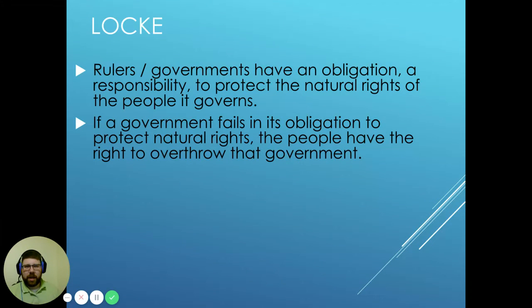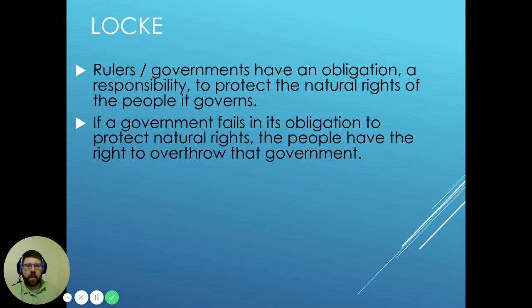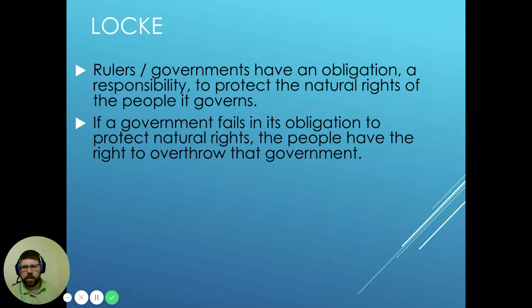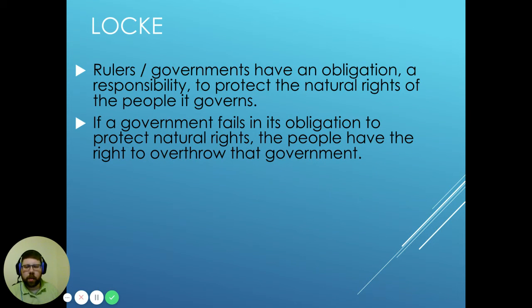This was radical for the time period — saying that if the government doesn't fulfill what it's supposed to do, the people are then obligated and have a right to overthrow that government and install a new one. This was radical for monarchs of the day, who believed they had a divine right to rule and that the people could not choose who should rule over them. But Locke says: if the government doesn't do what it's supposed to do, get rid of them. Create a new one or replace that individual.